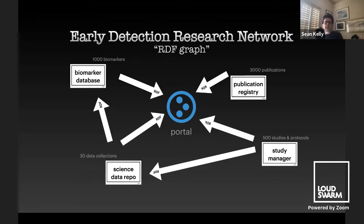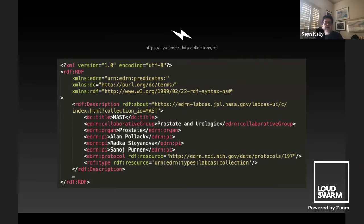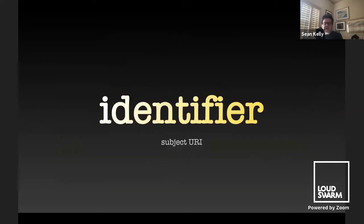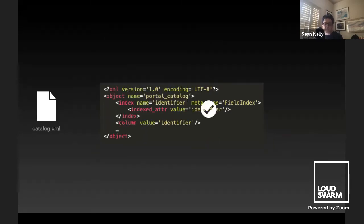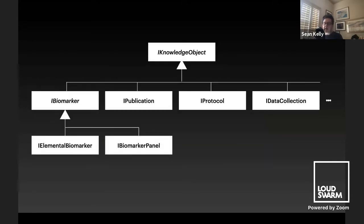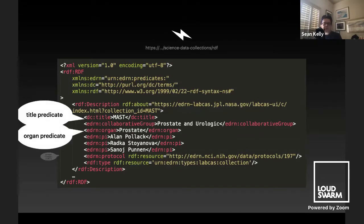We use the RDF graph inside the Early Detection Research Network — sending all information about biomarkers, publications, studies, and protocols into the portal using RDF. Here's what the actual RDF for the research network looks like. Starting with object identification: the subject URI means we need an identifier of some kind for our particular objects in the portal. So we make an identifier attribute for a knowledge object, catalog it, and from that make an entire class hierarchy of custom content types all deriving from the knowledge object.